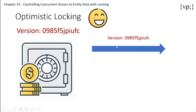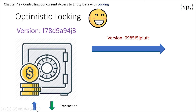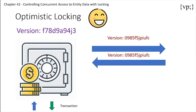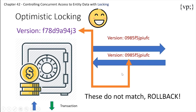Let's say a user wanted to request money from the bank, and a version is sent with the request or the response, signaling that the transaction is being taken care of. Behind the scenes, the transaction changes the version. Once it comes back to check, it realizes the versions do not match and a rollback transaction should happen — basically that's a fancy way of saying that the transaction does not occur.